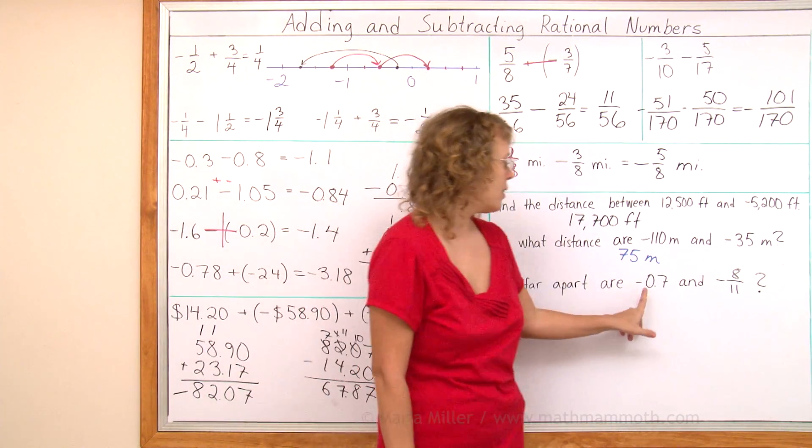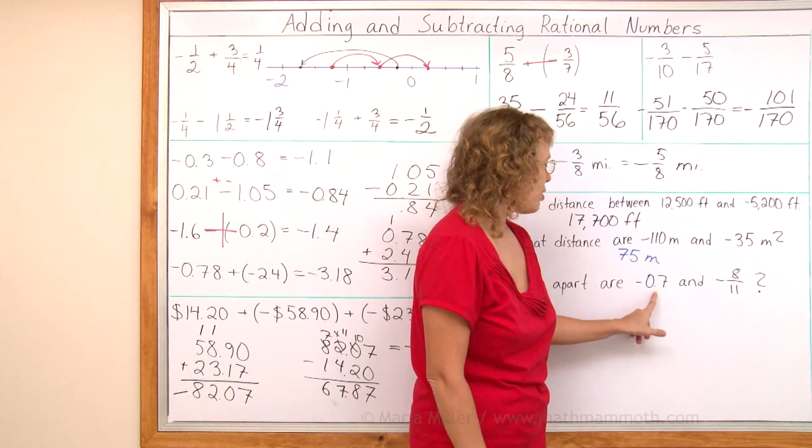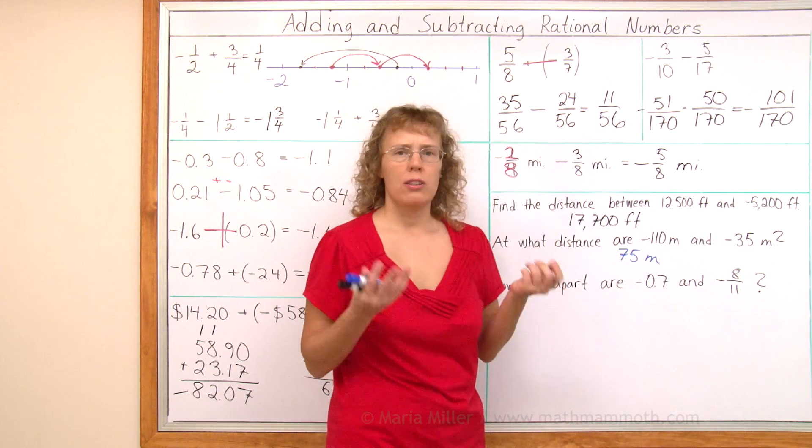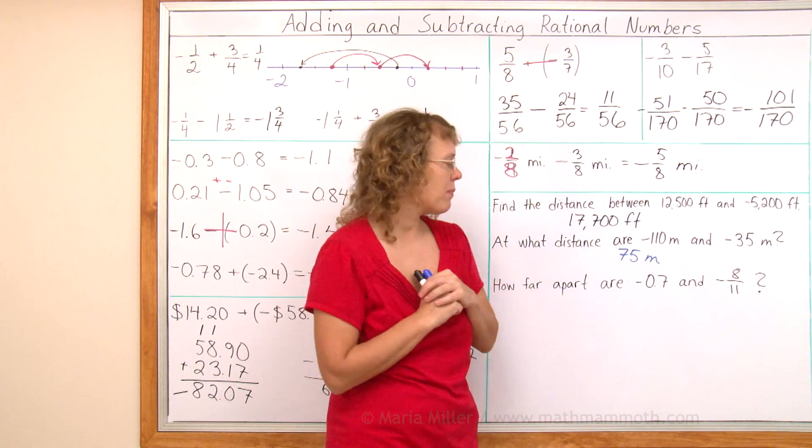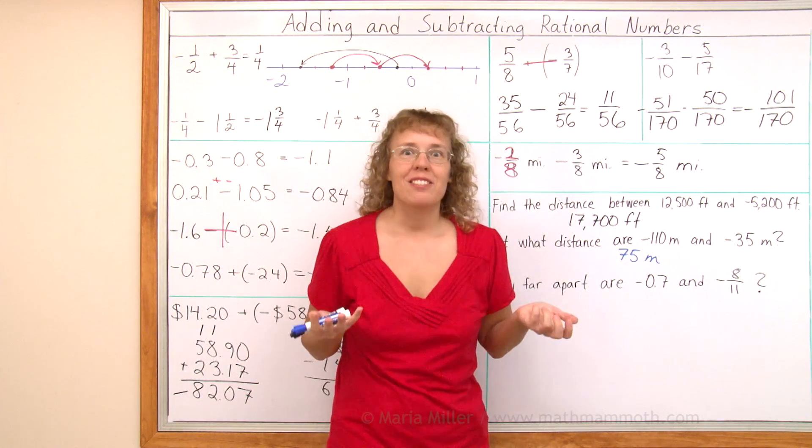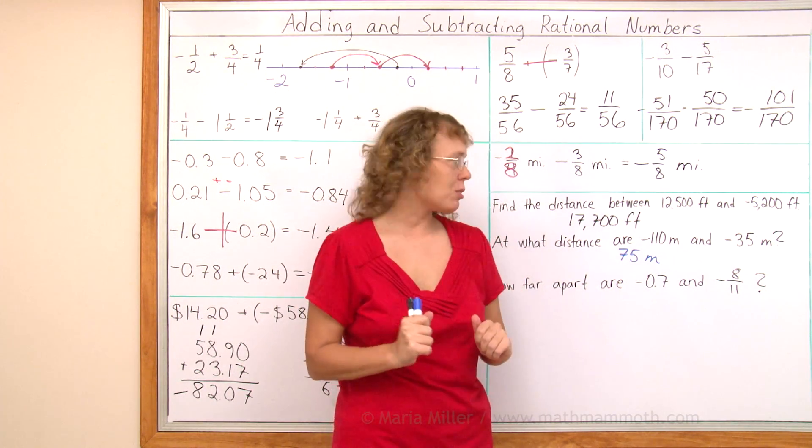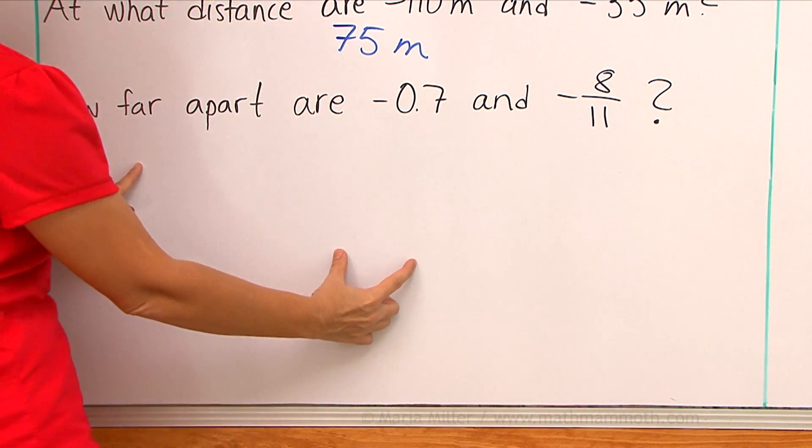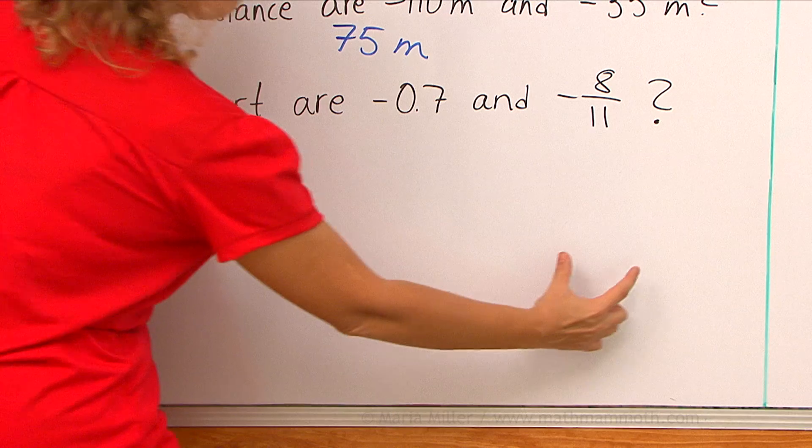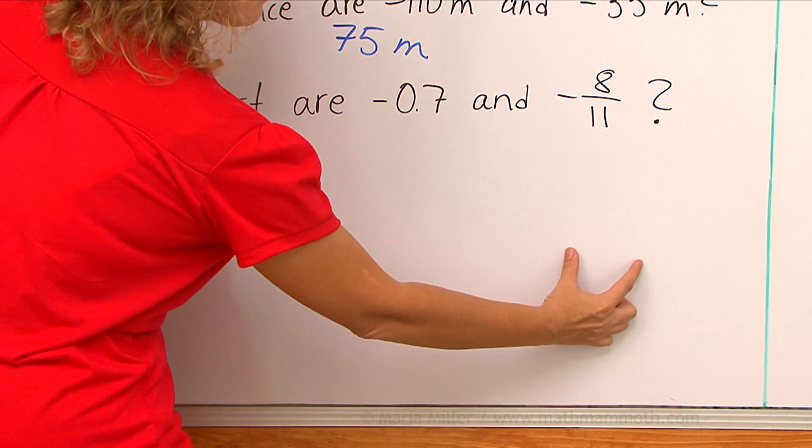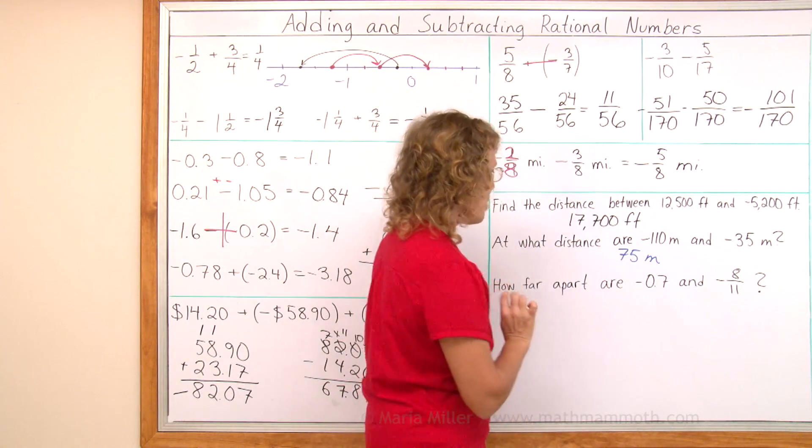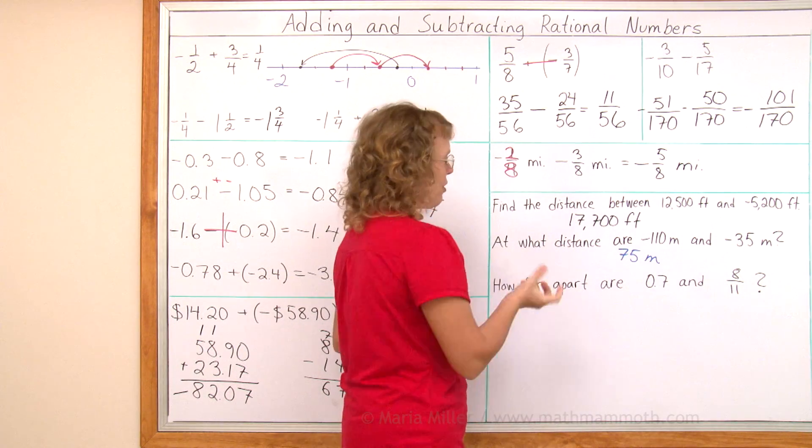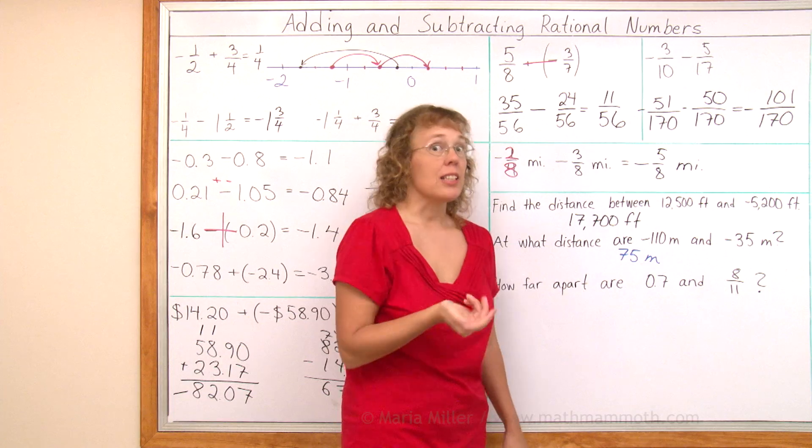How far apart are negative zero point seven and negative eight elevenths? How far apart? What is the distance between these two numbers? They're both negative numbers, so we can use the same idea we just used. If I have two negative numbers and how far apart are they? I can look at the opposites on the positive side and figure out how far apart they are. So this is the same question as if I change them both to positives. Just need to find the difference.